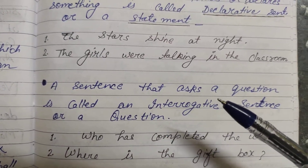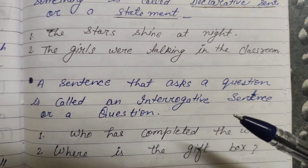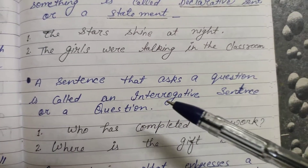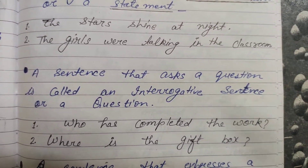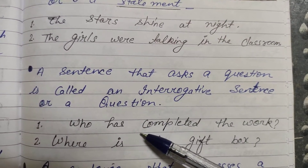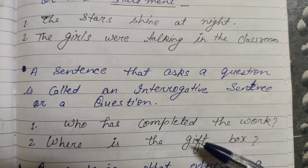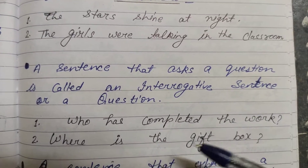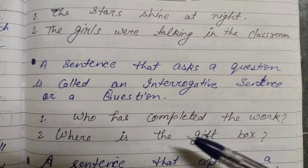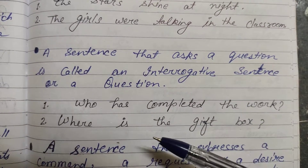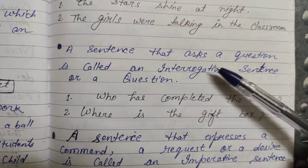Question words like kya, kab, kyun, kaise, kahan, kiska are used. For example: 'Kaam kisne poora kiya?' 'Where is the gift box?' 'Where are you going?' 'How many pencils are there in a box?' Ab aapne samajh liya ki interrogative sentence aur question hum kis tarike se banate hain.